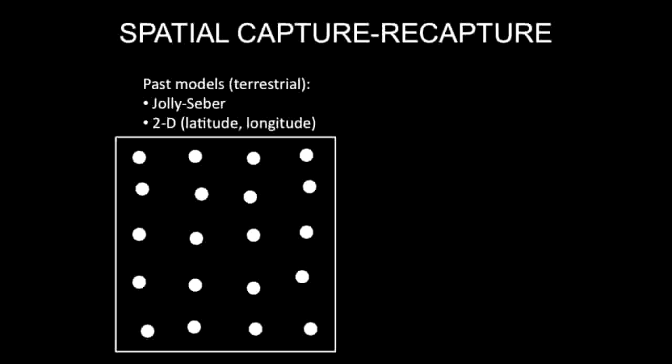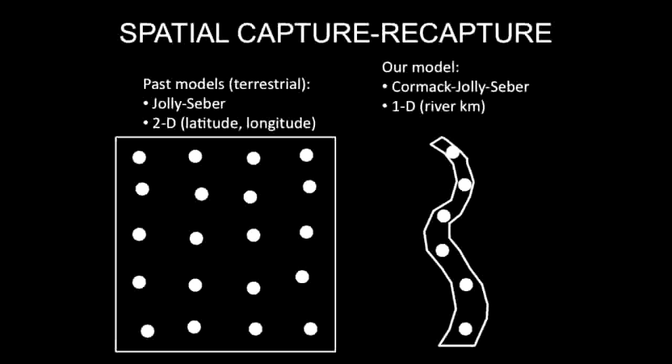However, we made two significant changes. First, we used a Cormack-Jolly-Seber formulation and, because the river constrained movement to a linear manner, continuous monitoring stations were treated in one dimension instead of two dimensions. Second, we modeled an individual's location or activity center as a function of the previous estimated location of the tagged fish — in other words, we correlated movement between periods.